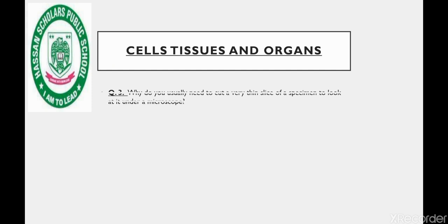Question number three: why do you usually need to cut a very thin slice of a specimen to look at it under a microscope? Why do we need to cut a very thin cross section?